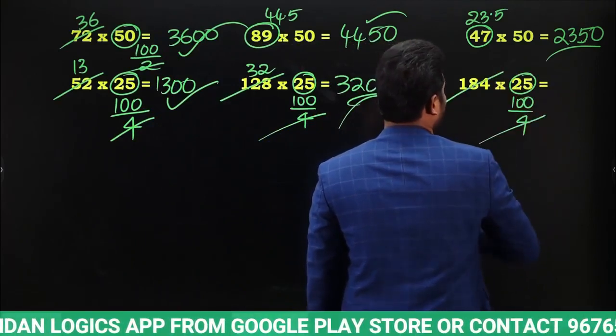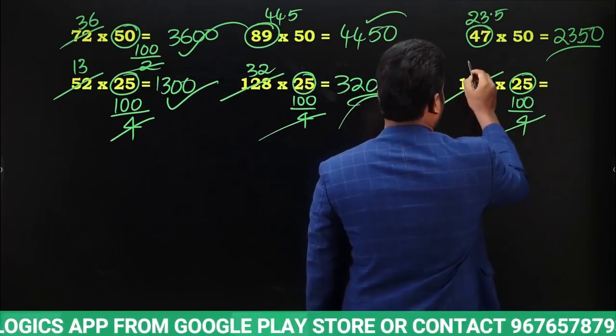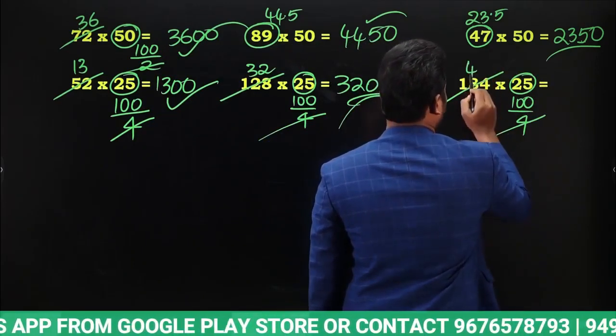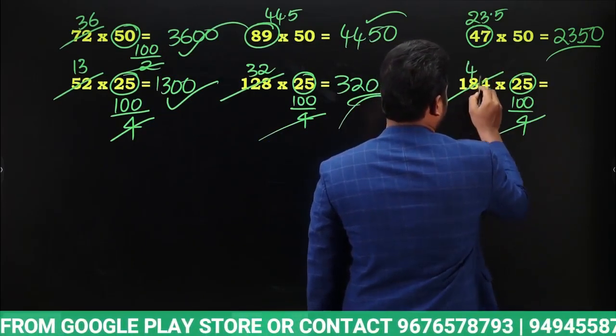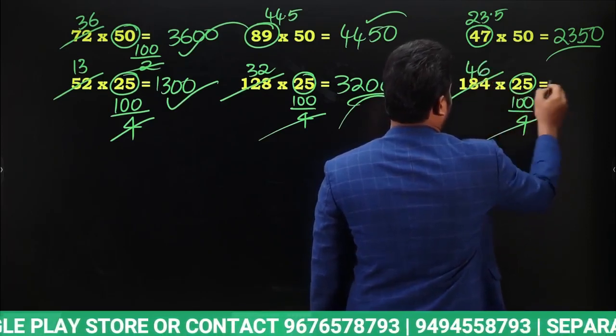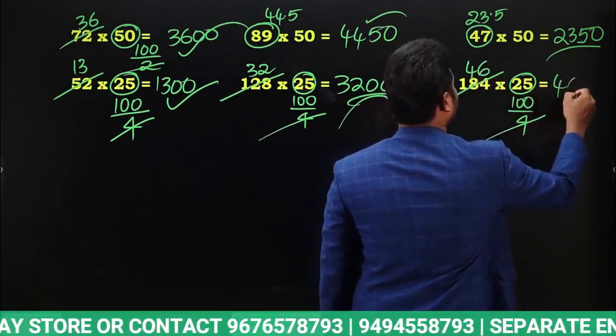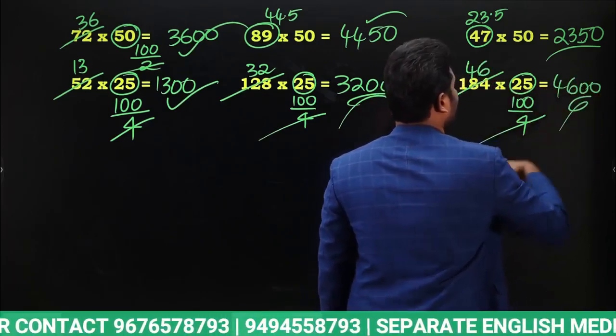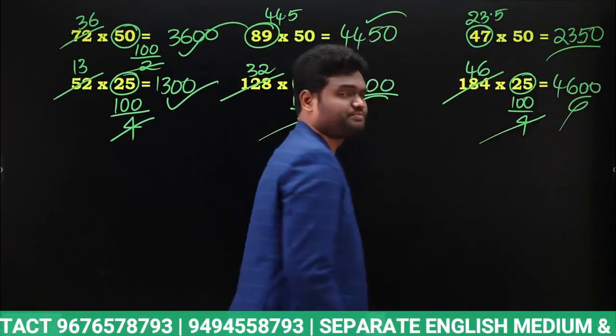184 divided by 4: 4 goes into 18 four times with remainder 2, and 4 goes into 24 six times, giving 46. So 46 into 100 is going to be 4600. The answer is 4600 — very simple.